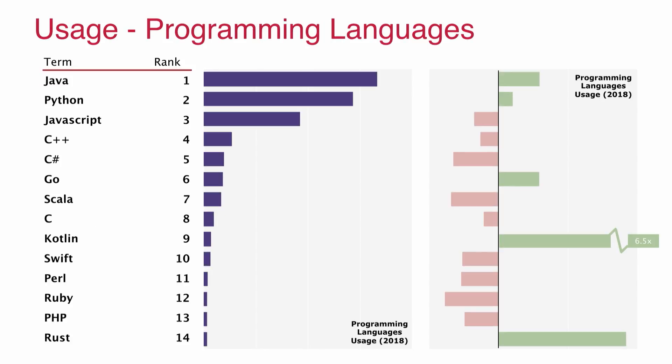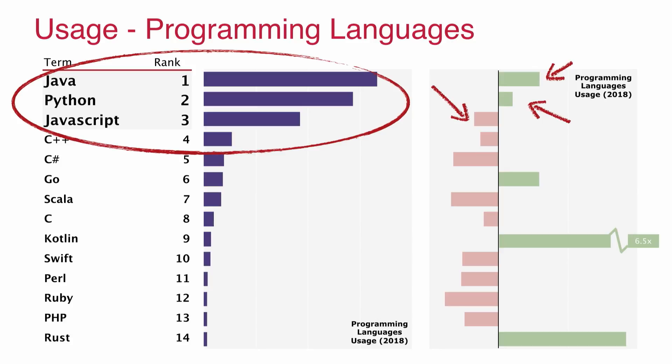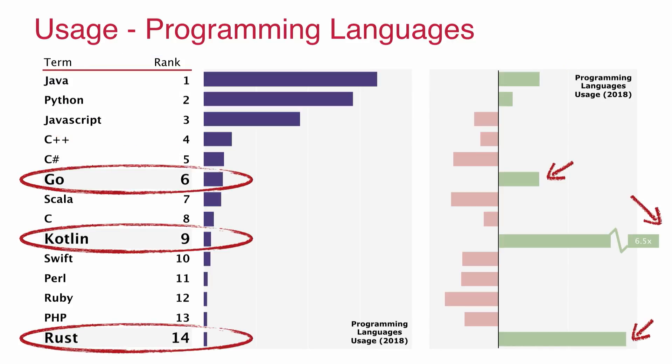With programming languages, we see the same top three, and there's a real coalescing around these top languages. We also see the slight decline in JavaScript and increases in Java and Python, and the same emerging languages showing a lot of growth — reinforcing what we saw in search. C is also still a pretty popular language, and we think that's partly tied to ML and AI, where a lot of the code underneath the bindings is done in C.